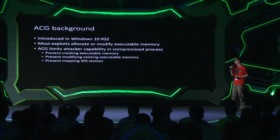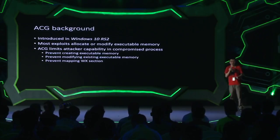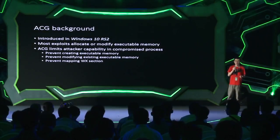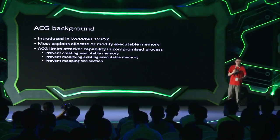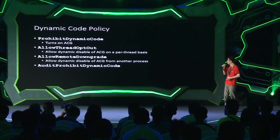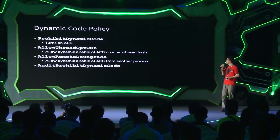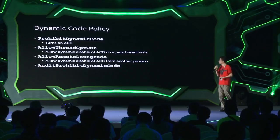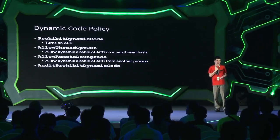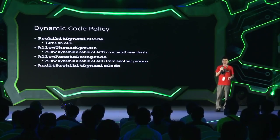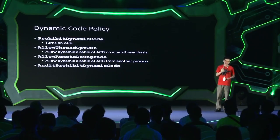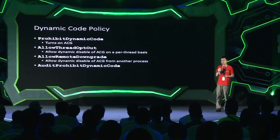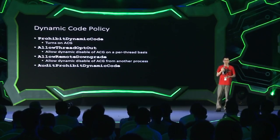Arbitrary Code Guard limits three kinds of behavior: first, creating executable memory; second, modifying executable memory; and third, mapping a writable and executable section. There are four policies for dynamic code policy: Prohibited Dynamic Code, Allow Thread Opt-Out, Allow Remote Downgrade, and Audit Prohibit Dynamic Code. The first turns on ACG, the second allows dynamic disable on a per-thread basis, the third allows disable of ACG from another process, and the fourth enables ACG in a log-only mode.